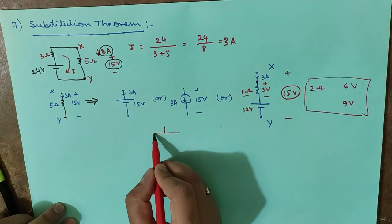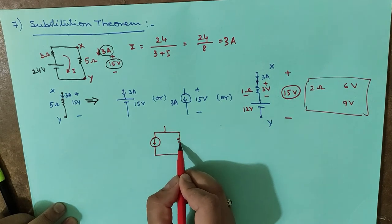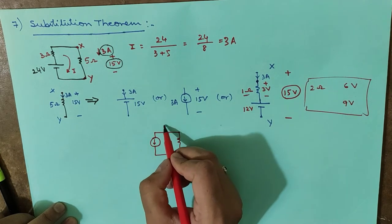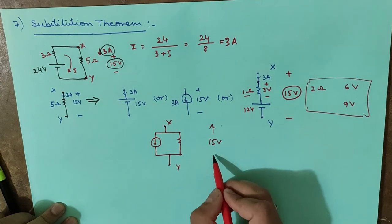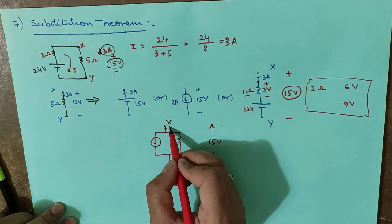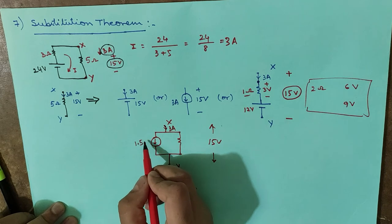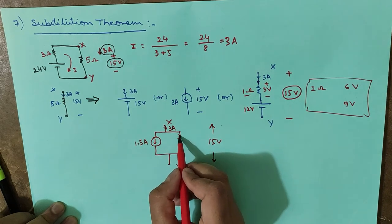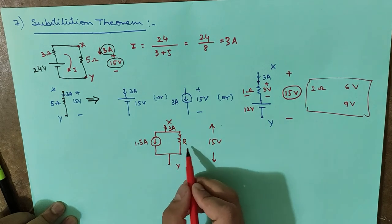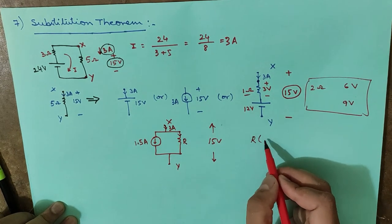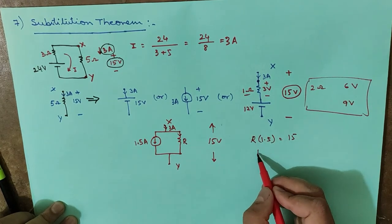The same substitution can also be done with a current source in parallel with a resistance between X and Y. The voltage must still be 15 volts and the total current must be 3 amperes. For example, let us say 1.5 amperes flows through the current source, so the remaining 1.5 amperes flows through the resistor.